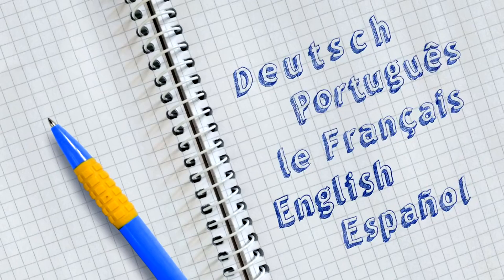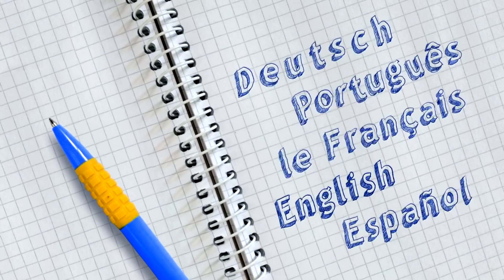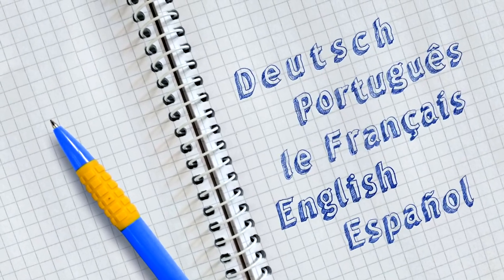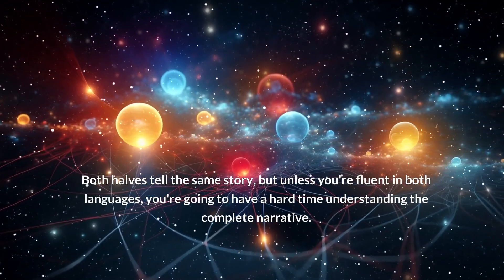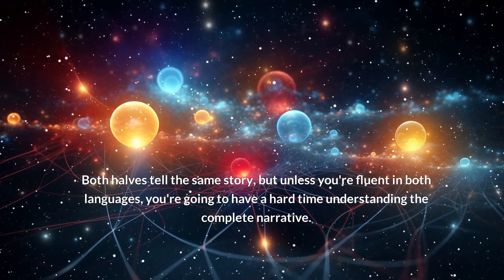Think of it this way. Imagine you're reading a book where the first half is written in English and the second half in Mandarin. Both halves tell the same story, but unless you're fluent in both languages, you're going to have a hard time understanding the complete narrative.